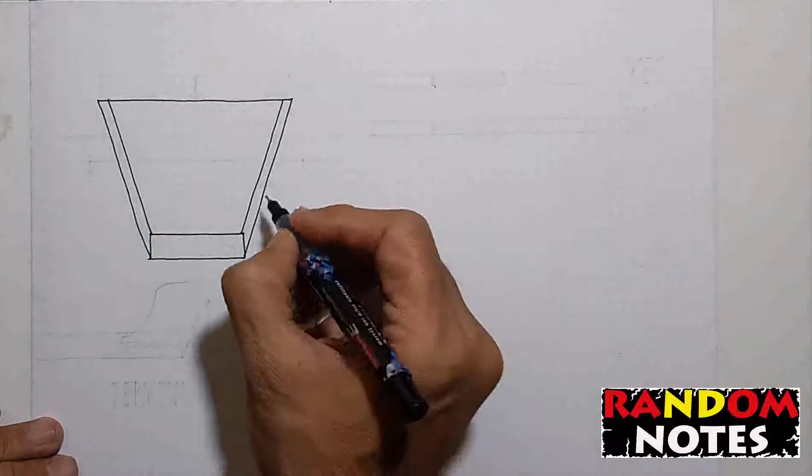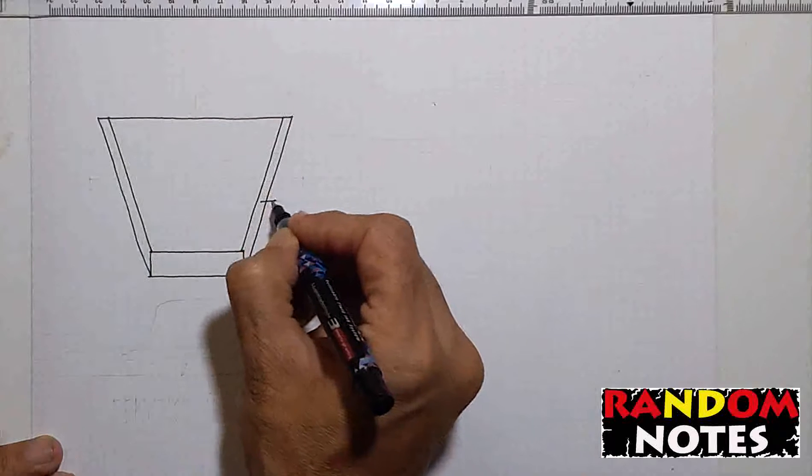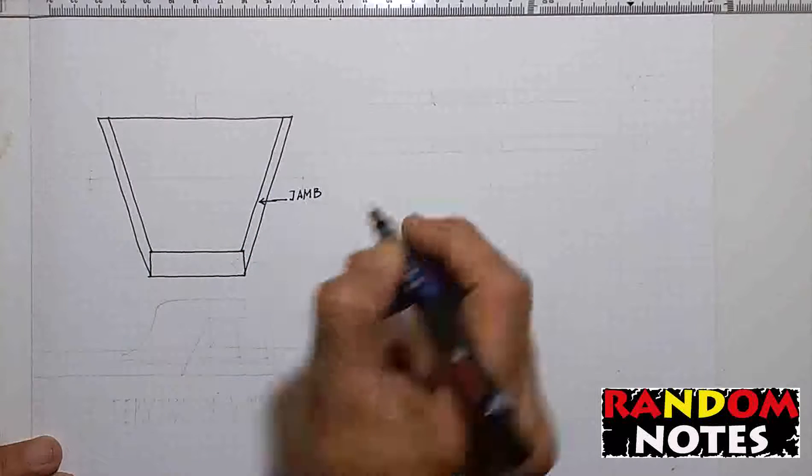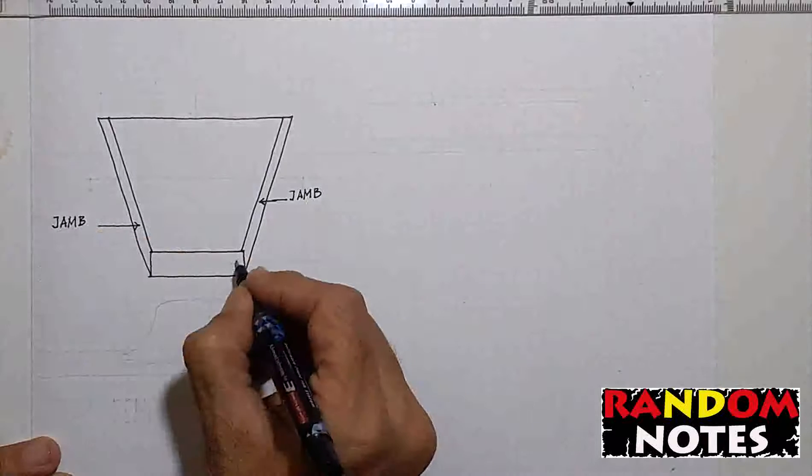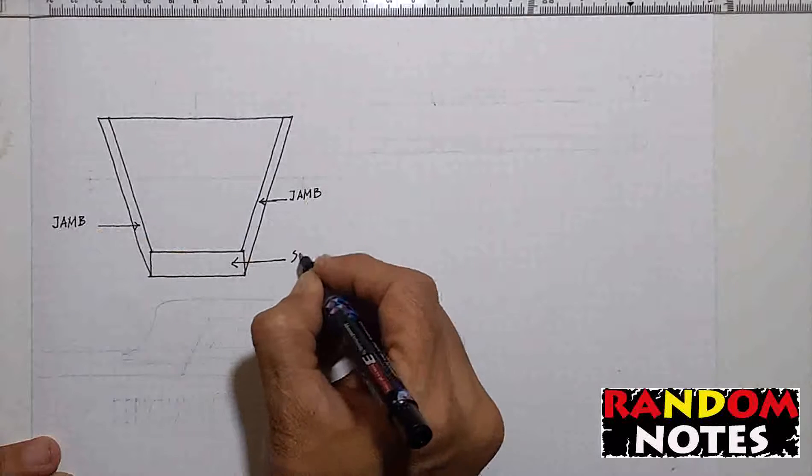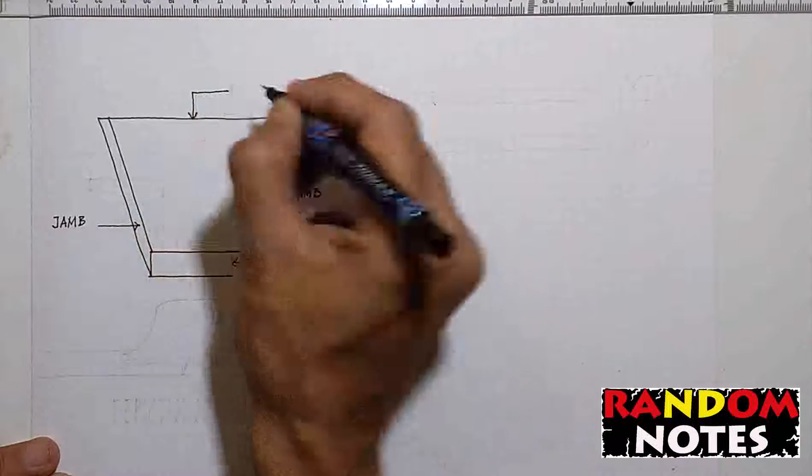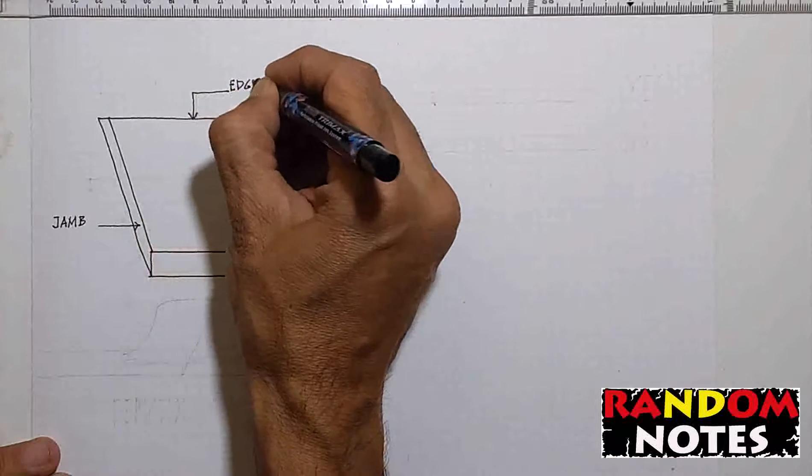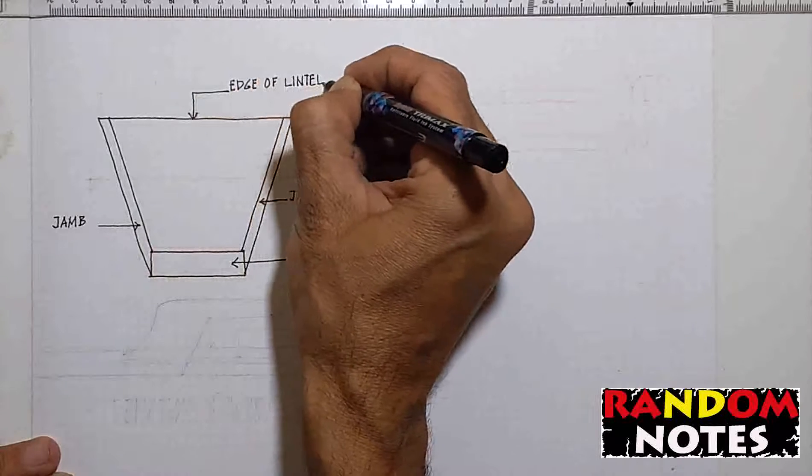Before going further let us name its parts. Mind you, no frame or shutter has been put in the drawing at this stage. The two vertical surfaces are the jam of the window. This is one jam and this is the second jam. This base surface is called the sill and the edge on top is the edge of the lintel. These are the main parts of the window.